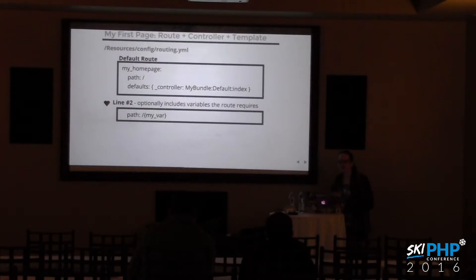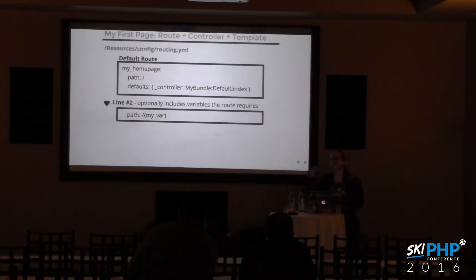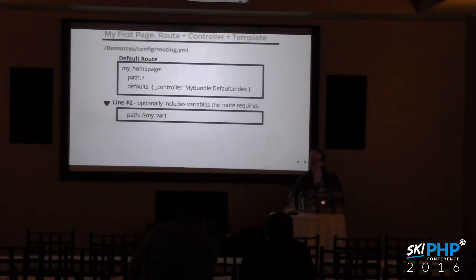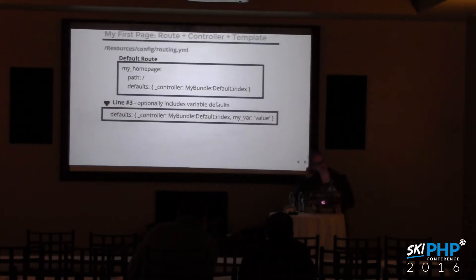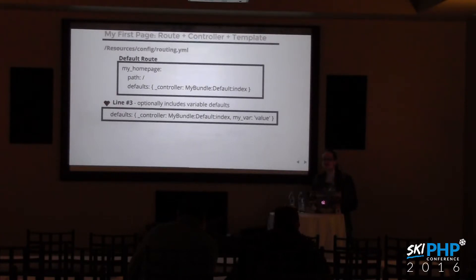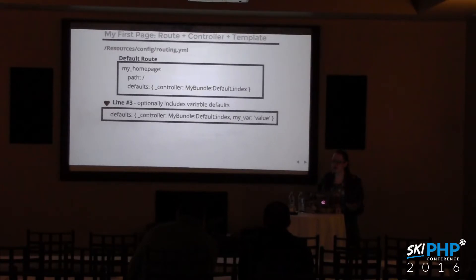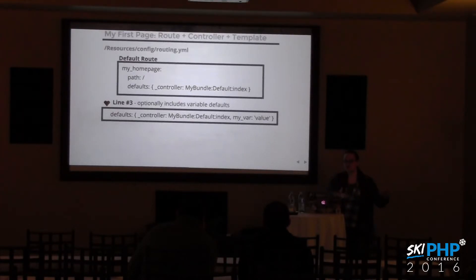Some options within a route: on the path line, if you need to accept values through a URL, put the variable name inside curly brackets and the router knows to accept variable information there. On the defaults line, you can also assign default values for those URL variables, which makes them optional. If you specify defaults and somebody accesses that route without that variable, it uses the default value. If you don't specify a default and the variable is missing, it will throw an error.